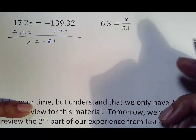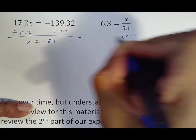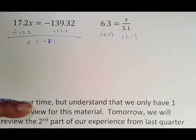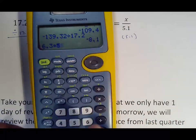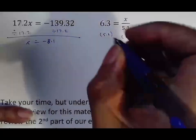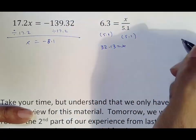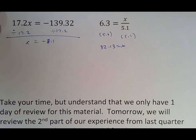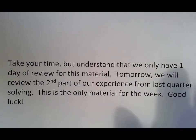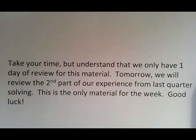6.3 equals X over 5.1. That's divided by 5.1. So we want to multiply by 5.1 here. All you have to do is 6.3 times 5.1, which is 32.13 gives me my answer for X. So take your time again, but understand we're only going to review this for one day. Tomorrow we're going to review the second part. And honestly, Wednesday is your test. So that's where you want to make sure you take advantage of this stuff because it is a quick turnaround from a homework to test this week. So make sure you're working, make sure you're doing what you need to do. And make sure you're emailing questions if you have them outside of that. Good luck. I'll talk to you later.